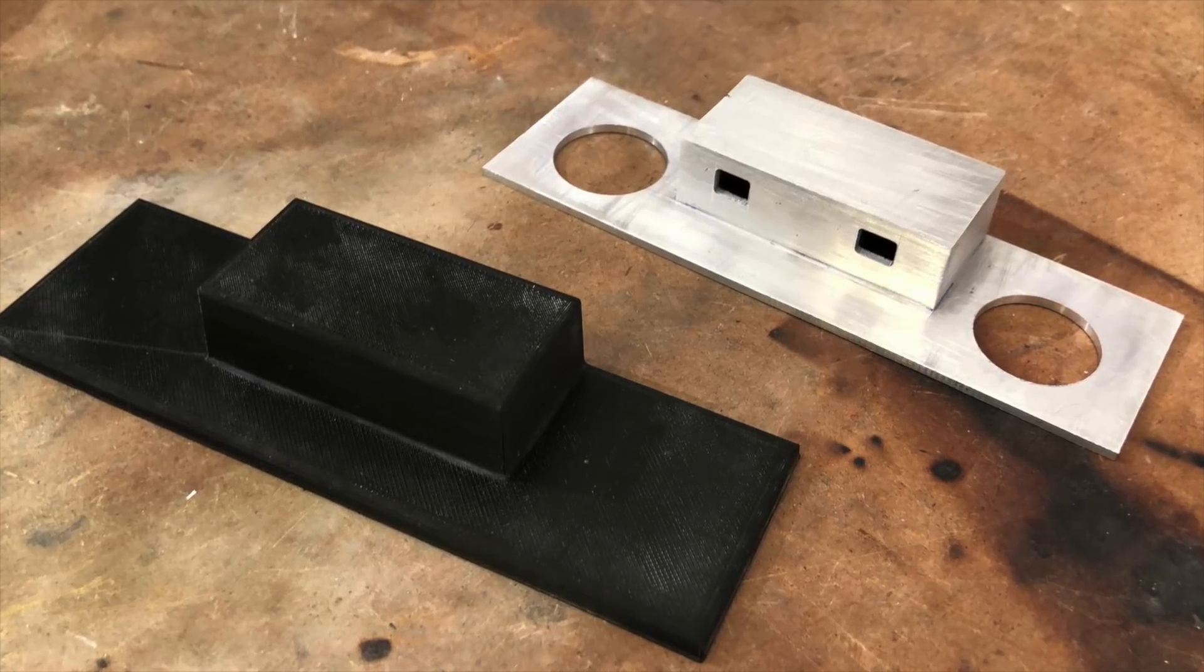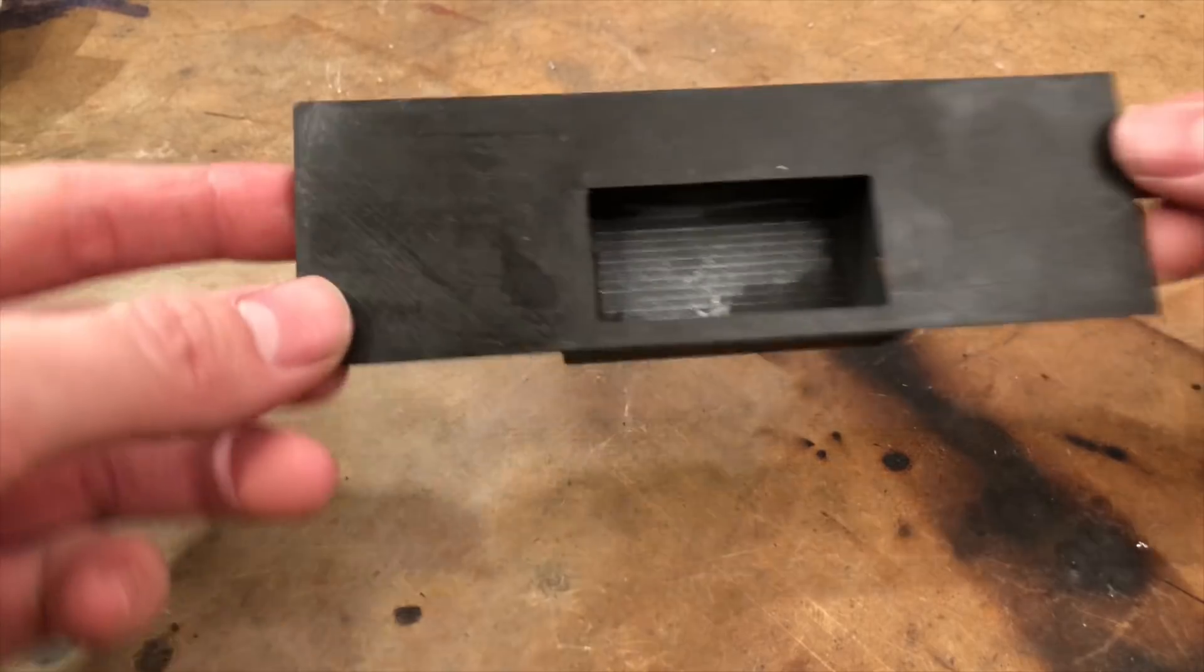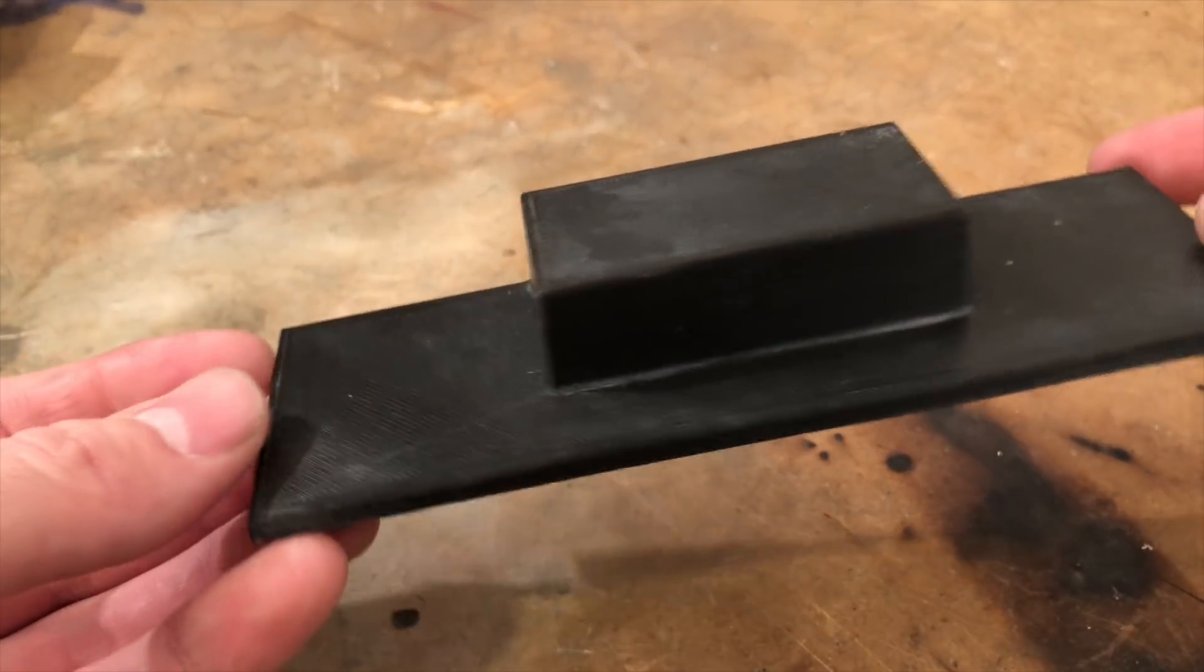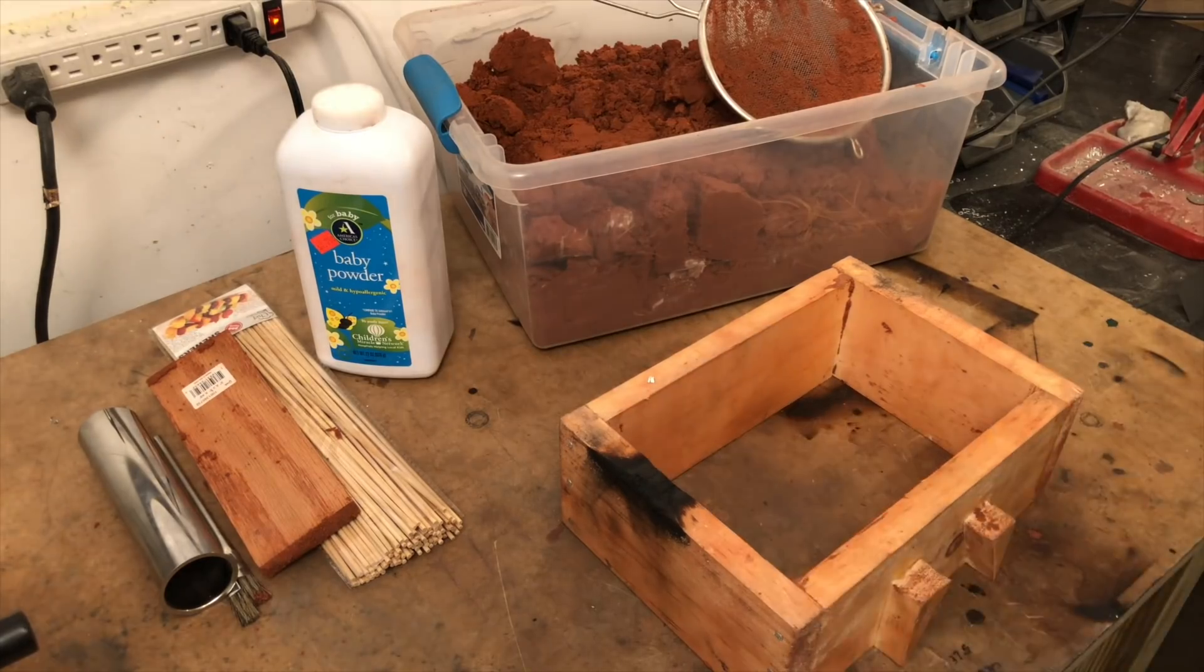This is the part that sits on top of the camera and houses the rangefinder. Like the nose cone, it's made of cast aluminum using a 3D printed pattern. So let's get to it.